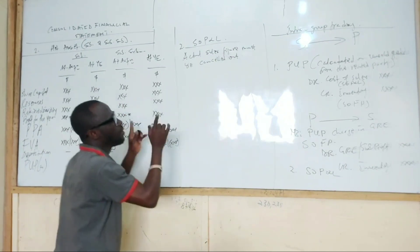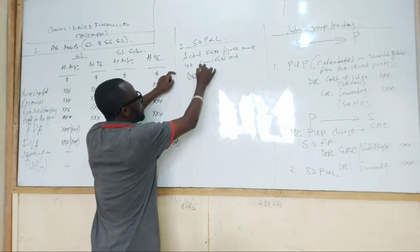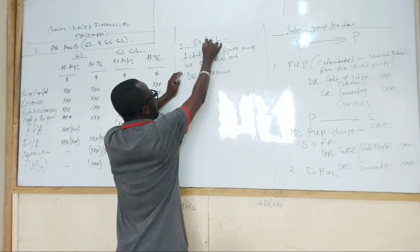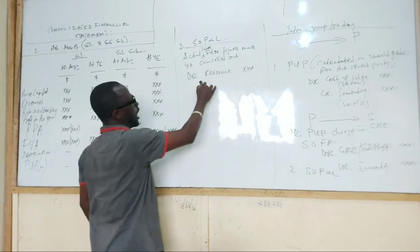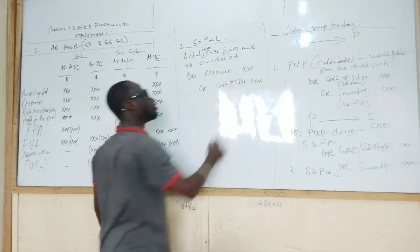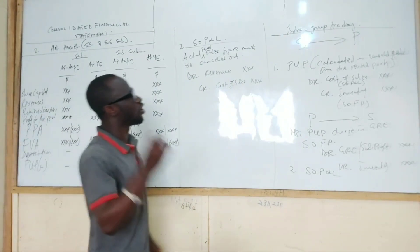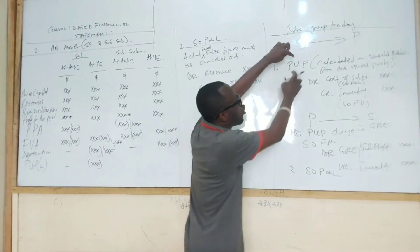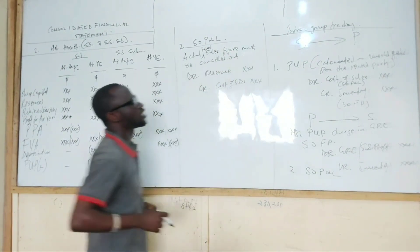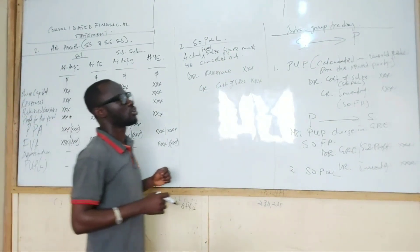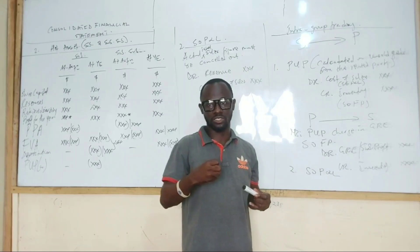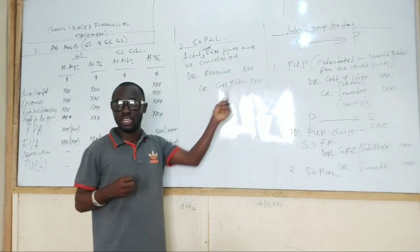That means debit revenue — deduct the actual total sales figure from revenue — and deduct it from cost of sales. This is very important: if you are preparing the statement of profit or loss, the total sales figure, not only the outstanding ones but the total actual sales, you deduct it from revenue and deduct it from cost of sales.